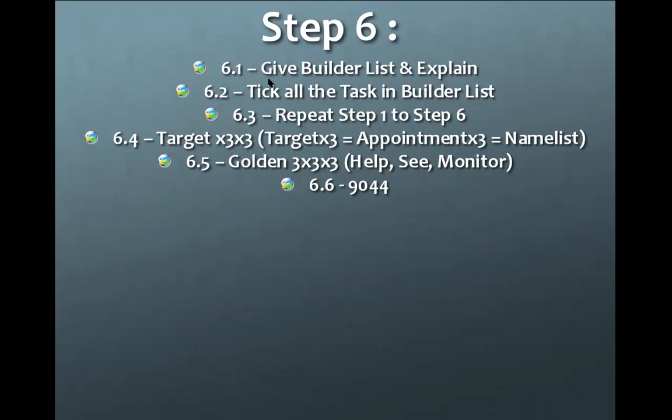Once you come to Step 6.1 and find one builder, what you need to do is teach them how to use the Builder List to monitor themselves and how to use the Action Step to monitor themselves in the market. Don't use the Builder List and Action Step to monitor them for you — the real mindset is to teach them to monitor themselves with this system automatically. You monitoring them is a bonus, not the priority. The primary is themselves. Repeat until you complete your 9044: sponsor 20 ABOs with a 4x4 structure in 90 days.